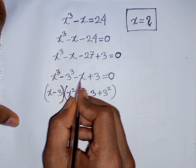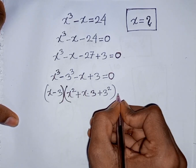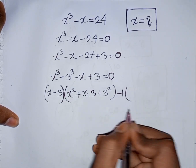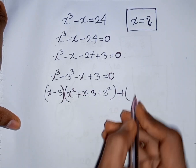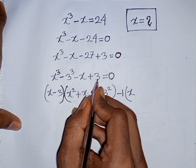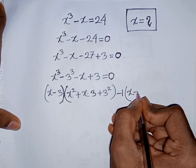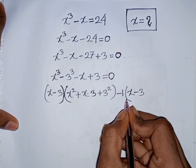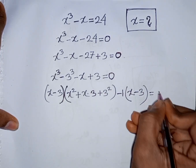Then from the remaining terms (-x + 3), we take out common factor -1. So -1 is factored out of the bracket, giving us -1(x - 3) = 0.